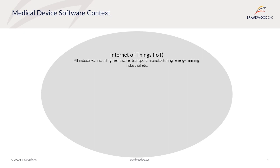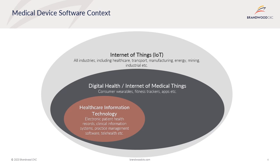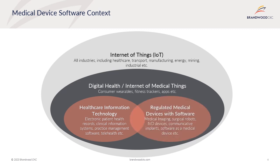It is important to understand the context of medical device software as technological advancements are made all around us, especially as the internet and mobile devices become part of our everyday lives. The internet has provided an insurgence of technologies, products, and services across many industries around the Internet of Things or IoT infrastructures, with software in healthcare being one of them. Within the IoT world, digital health has been growing exponentially to include technologies in the healthcare space for both consumers and healthcare practitioners, such as robot technologies, health apps, and connected medical devices. Within the digital space, two distinct technology groups exist: healthcare information technologies, and regulated medical devices with software.